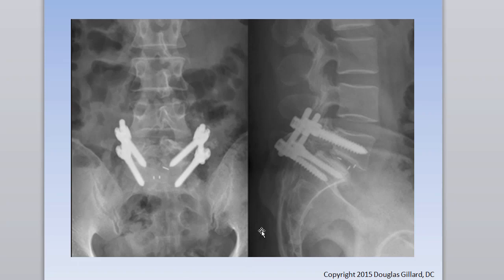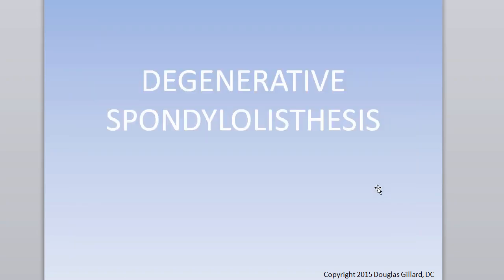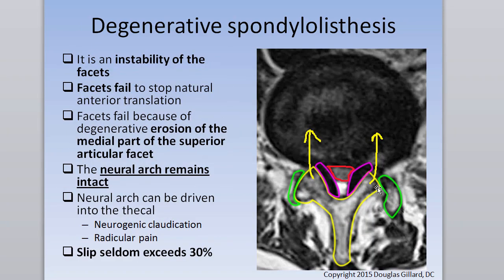When you see a cage, call it a lumbar interbody fusion. There's also posterior-lateral fusion with instrumentation, where there's no cage and no disc involvement. For degenerative spondylolisthesis, remember: nothing is wrong with the posterior arch — it's the facet joints that fail and slip. The fracture of the posterior arch is isthmic spondylolisthesis. Degenerative spondylolisthesis seldom exceeds 30% slip — usually grade one, occasionally grade two, never grade four.